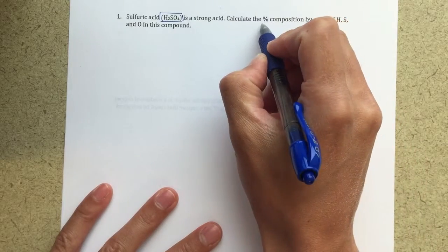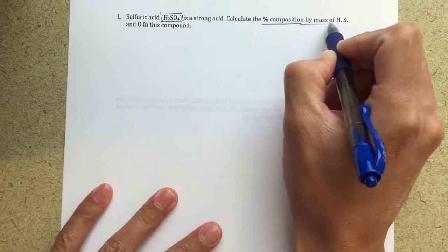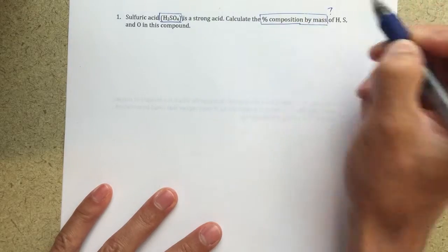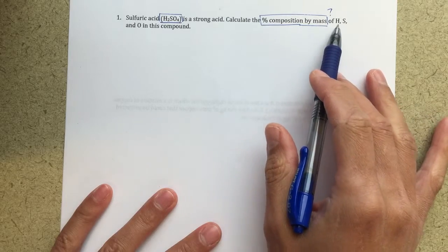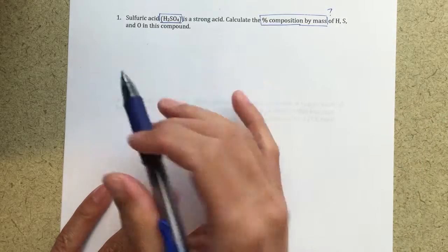Then it says calculate the percent composition by mass, so this is the question that we're trying to solve here. What is the percent composition by mass of hydrogen, sulfur, and oxygen in this compound?